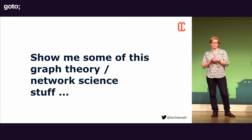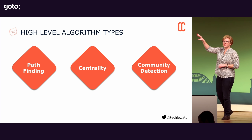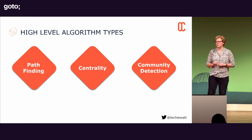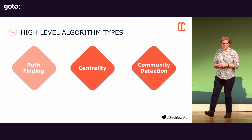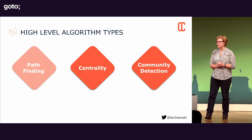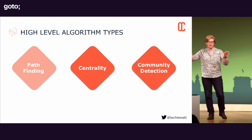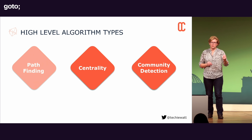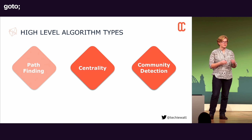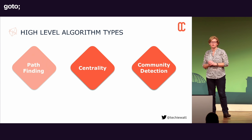Graph algorithms are generally classified under three main headings: pathfinding algorithms, centrality algorithms, and community detection. Pathfinding we're not really going to cover today — these are algorithms where you find the shortest path through a particular network, like navigating from Berlin to London through the shortest route of cities. Centrality and community detection is more where we're going to play. Centrality looks at how important a particular node is in a network — how significant is it, how much traffic flows through it. Community detection is about identifying groupings or clusters of nodes within the network.